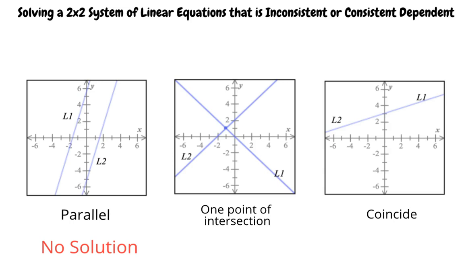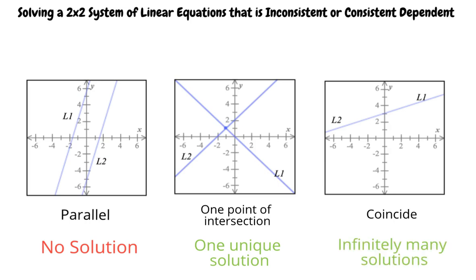If two lines are parallel, then there is no solution. If two lines intersect in one point only, then there is exactly one solution, or in other words, a unique solution. If two lines are the same line, or they coincide, then there are infinitely many solutions.